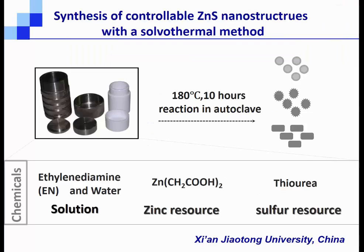We synthesized zinc sulfide nanostructures with a simple solvothermal method in an autoclave at a temperature of 180°C. We get different morphologies of nanostructures: nanoparticles, urchin-like structures, and nanoflakes. We control this by adjusting the ratio of the solution — ethylenediamine (EN) and water — only by this way.